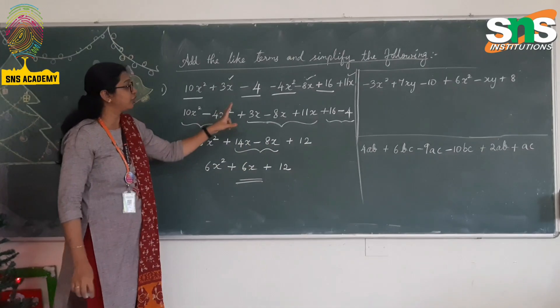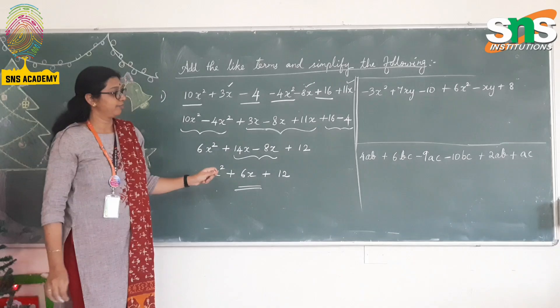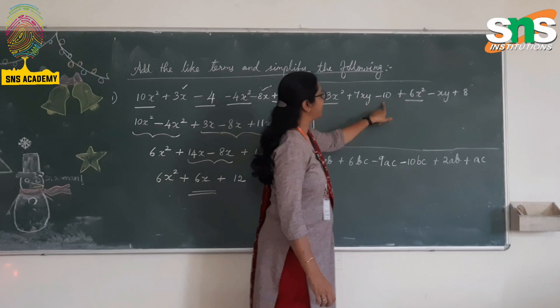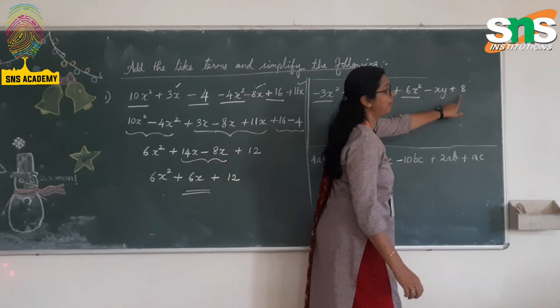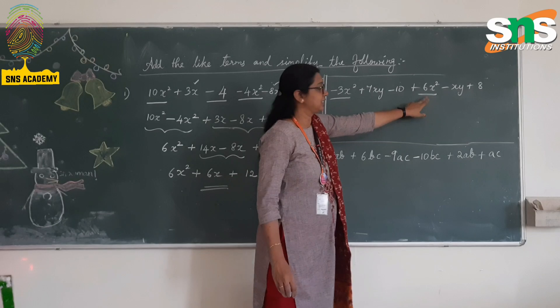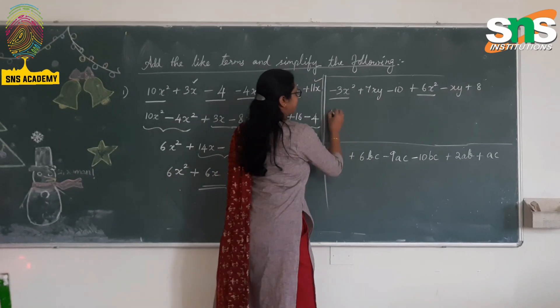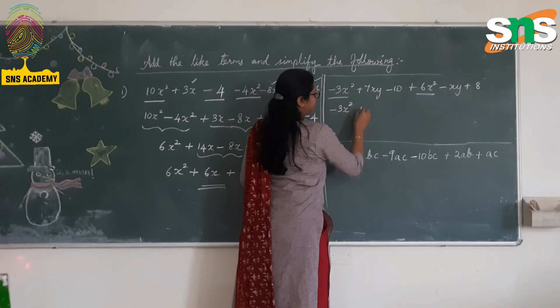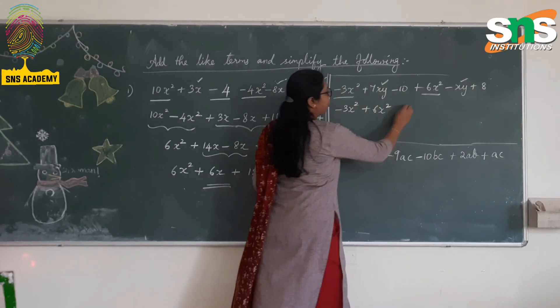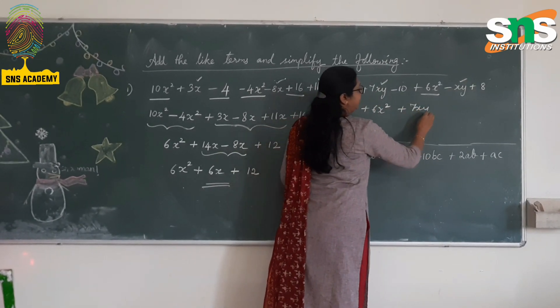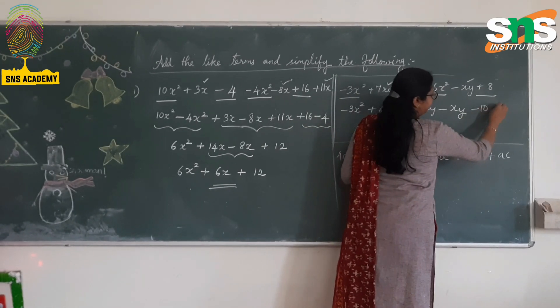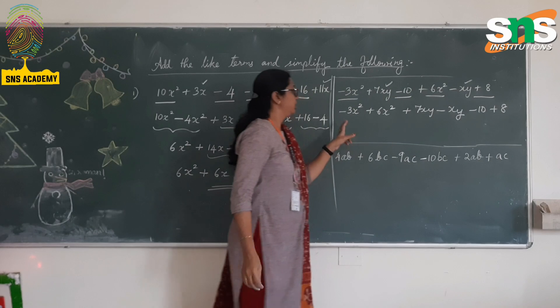You should be thorough with the integer in order to solve the like terms. Here the next question is -3x² + 7xy - 10 + 6x². We are going to identify the like terms. The like terms is -3x² and 6x², so -3x² + 6x². Then comes xy terms, positive 7xy - xy. And finally, the constants, -10 + 8.